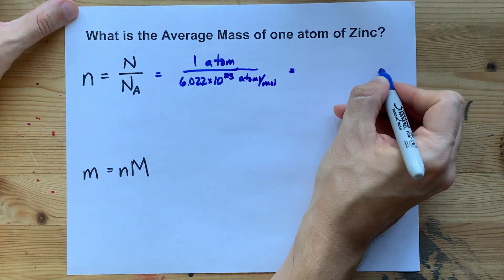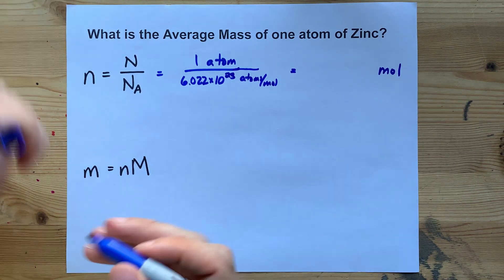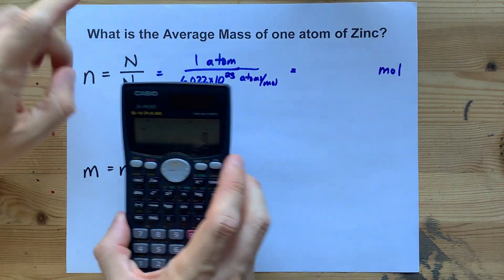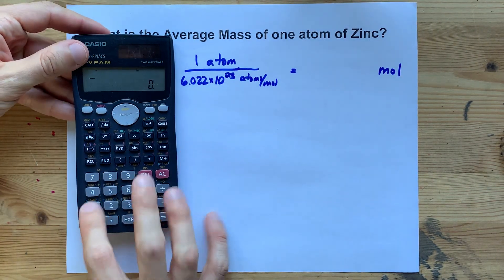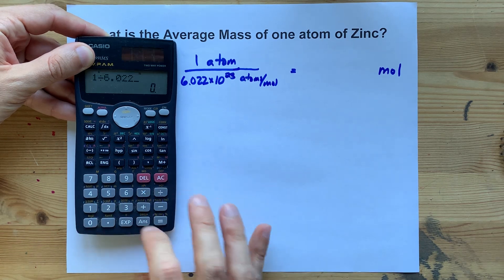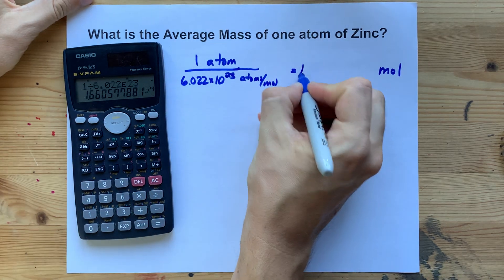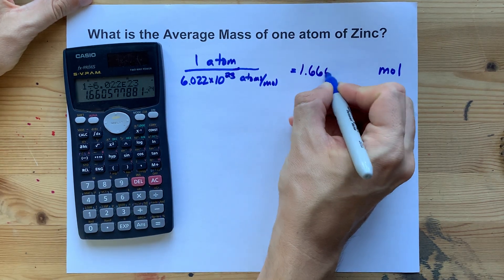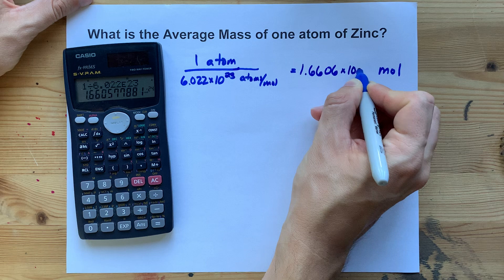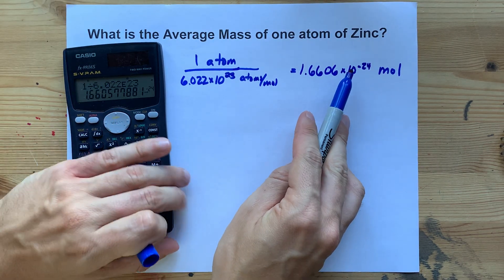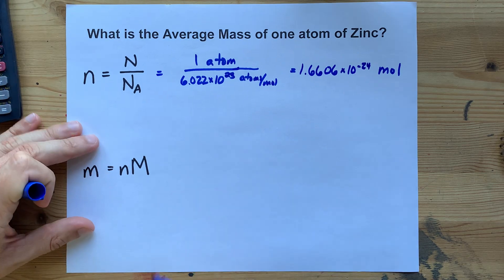The answer here is going to be in moles, but it's going to be a tiny number because we're measuring how many moles just one atom is. 1 divided by 6.022 times 10 to the 23. I get 1.6606 times 10 to the negative 24. It is an insanely small fraction of a mole that you're dealing with here.